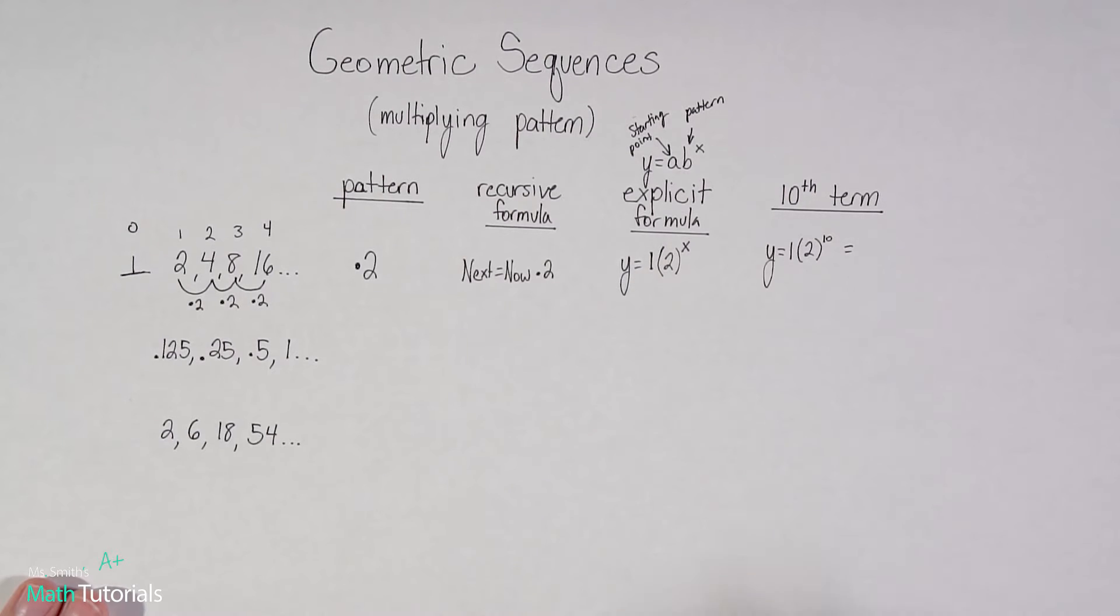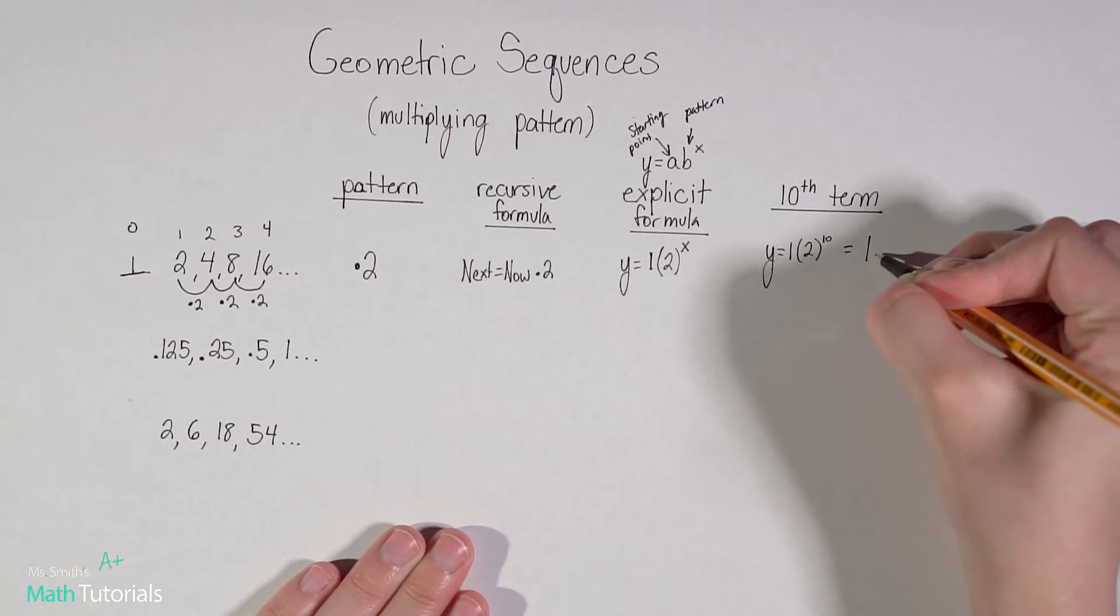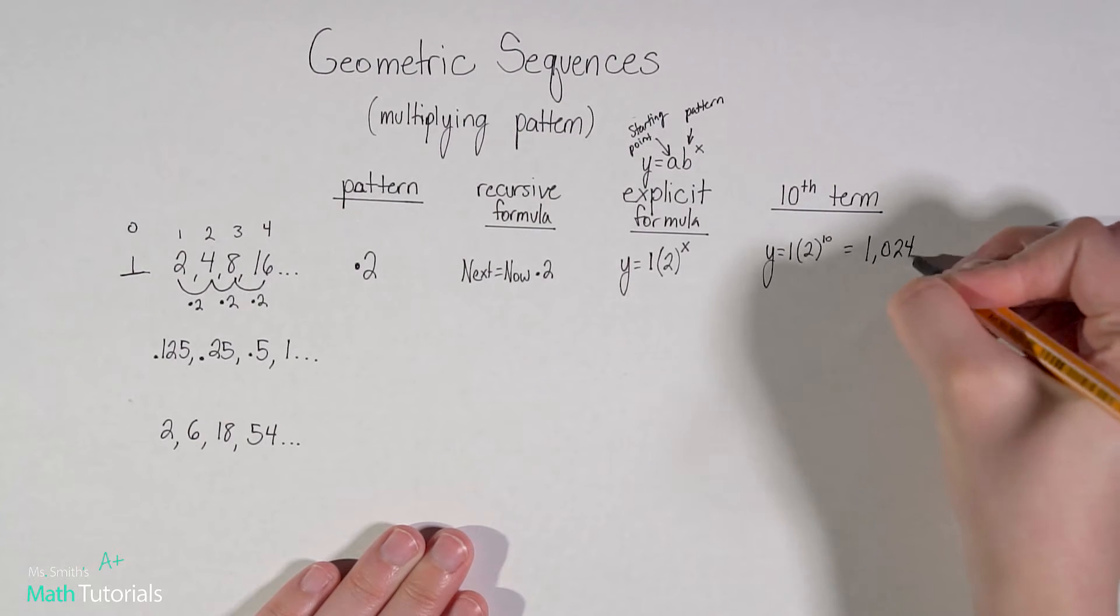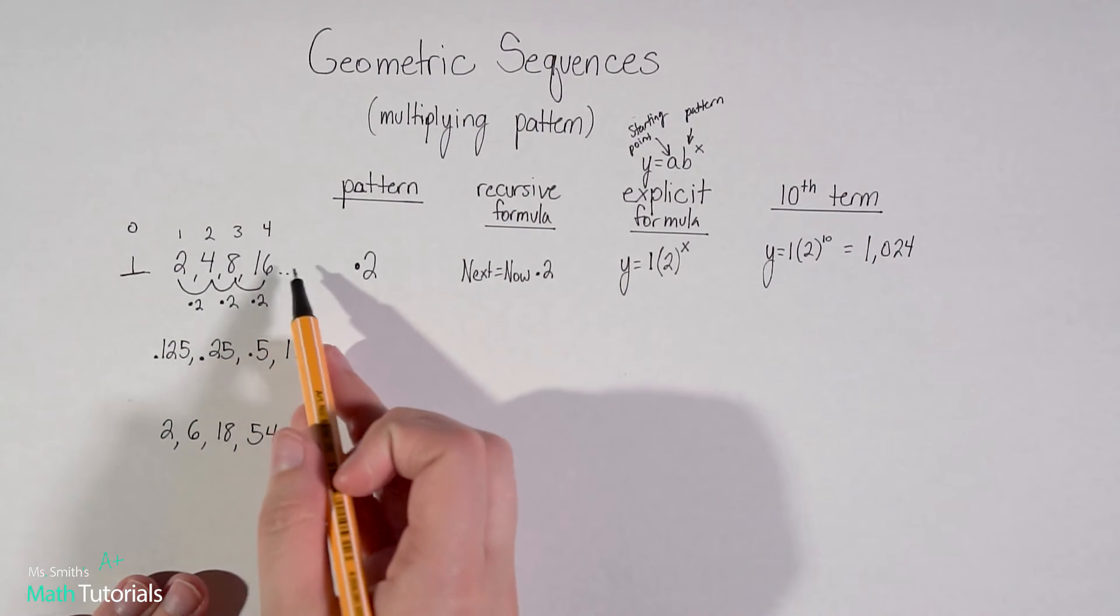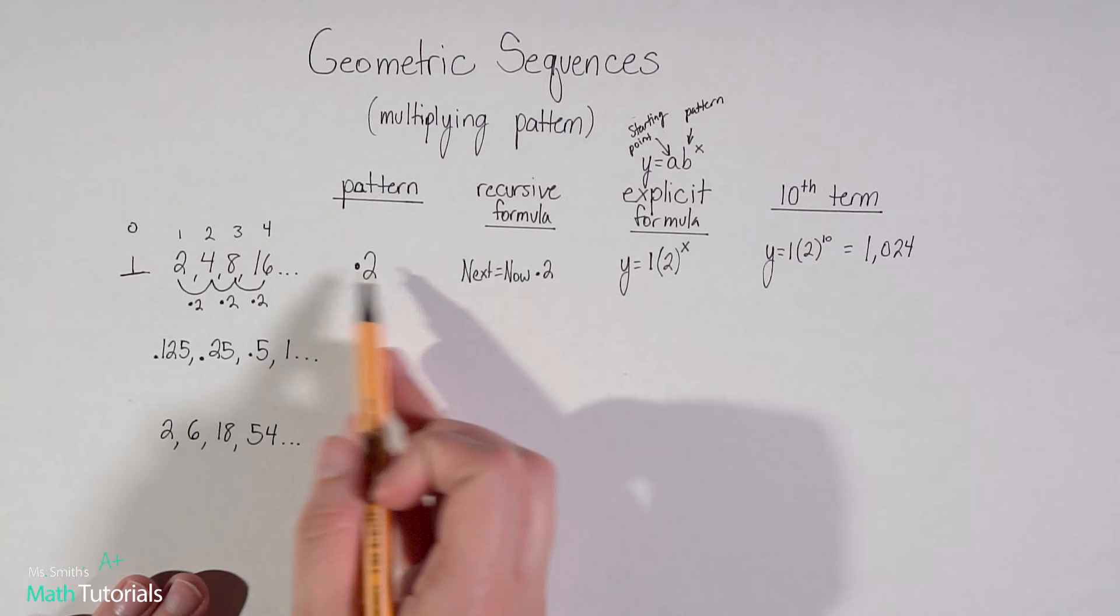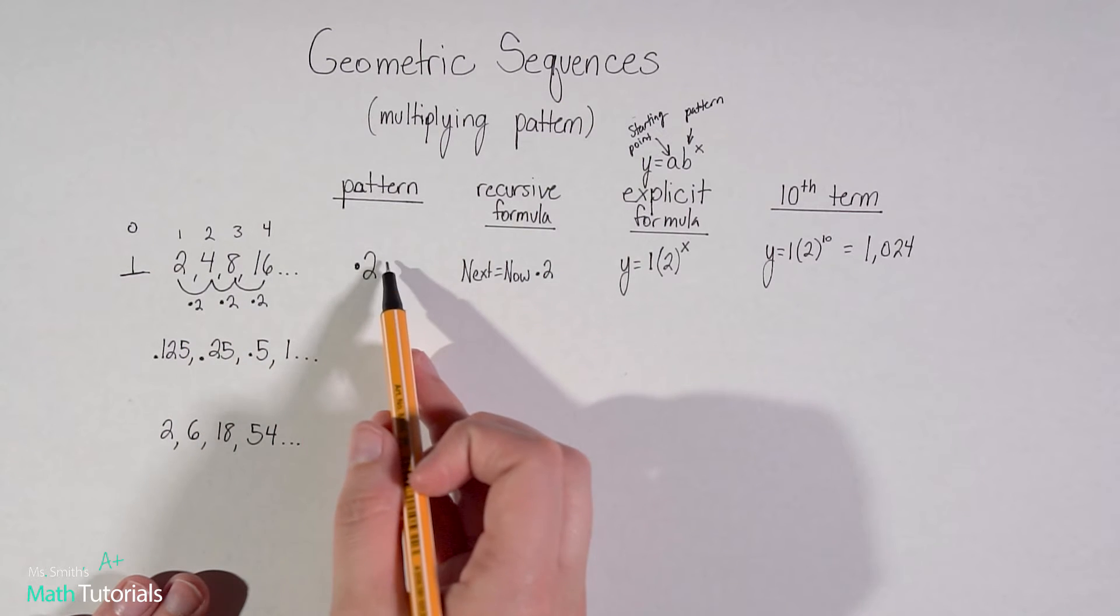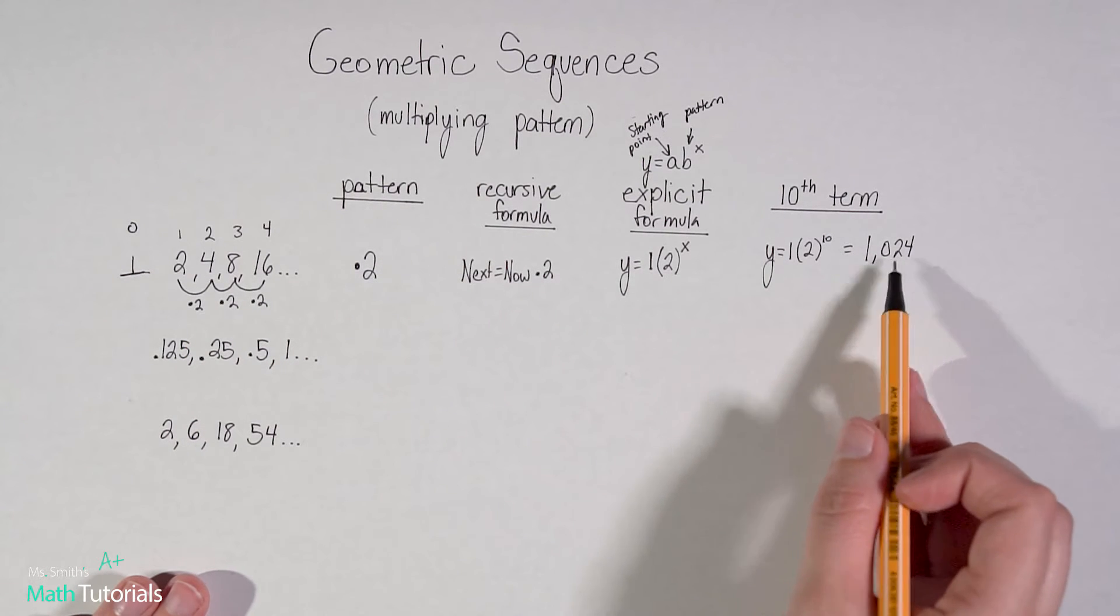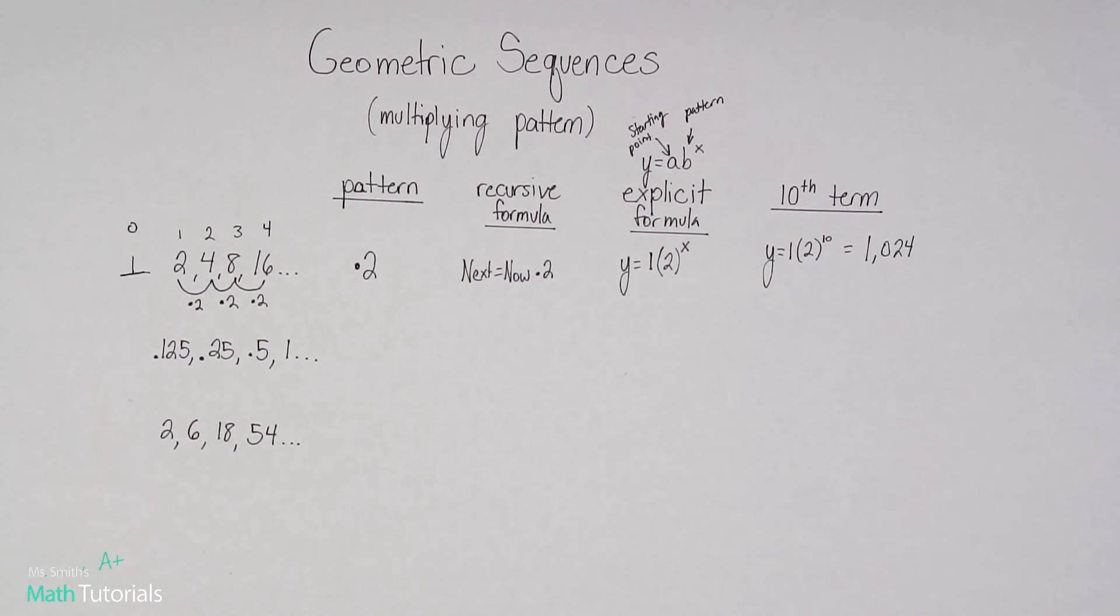So what would that equal? That would be 1 times 2, or just 2, to the 10th power, and that would be 1,024. So if I were to take this out 10 spaces, from 1 to 10, the 10th term would be 1,024. See how big those numbers get very quickly. So geometric, big numbers, very quickly.